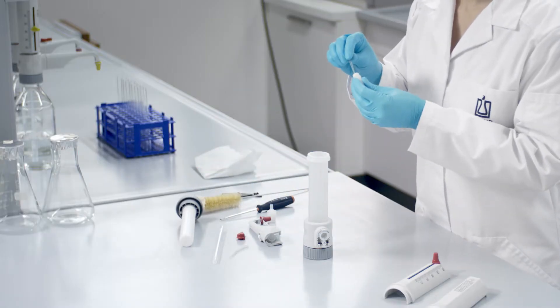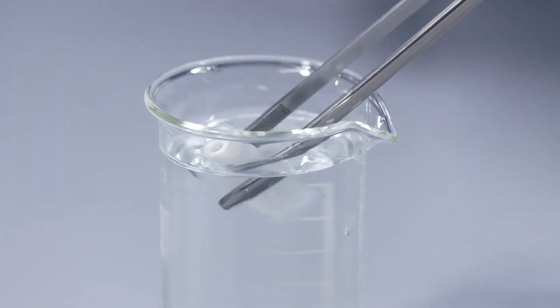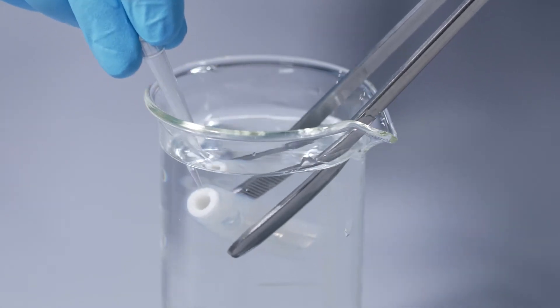Check the valves for deposits. If needed, loosen the ball valve using light pressure. You can use a 200 µL pipette tip. Clean or replace the valves as needed.